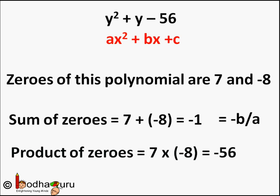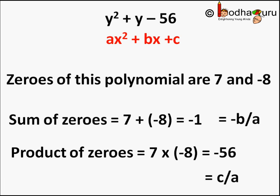Also see the product of the zeros that we found: 7 and -8. 7 × (-8) = -56. And -56 is also equal to the constant term c, which is -56, divided by the coefficient of y², which is 1. So the product of zeros of the polynomial ax² + bx + c equals c/a, and the sum of zeros equals -b/a.